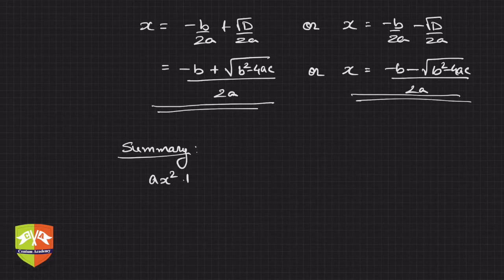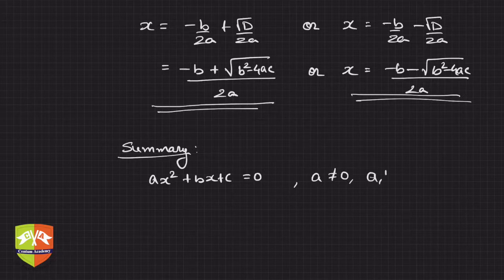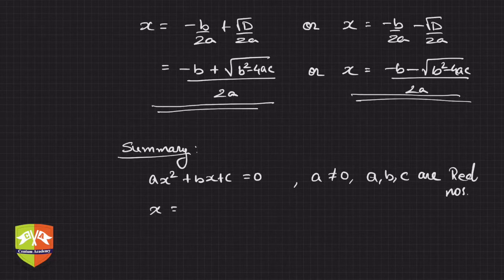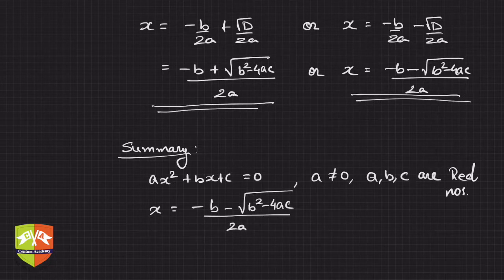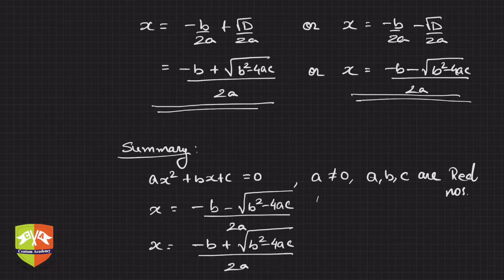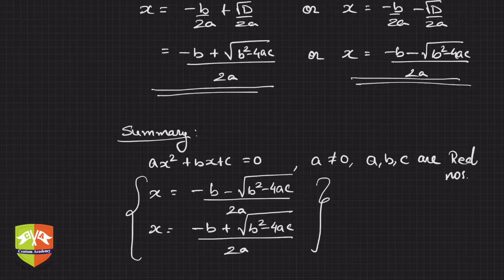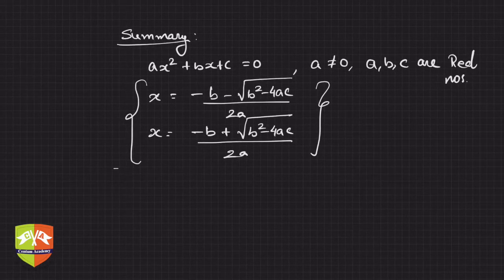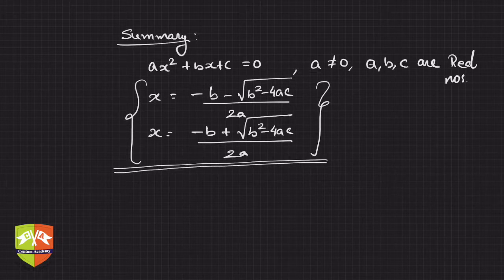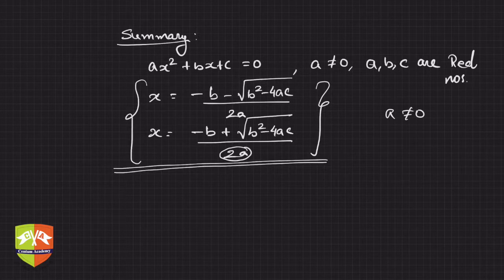Summary: if you have a quadratic equation ax² + bx + c = 0 where a ≠ 0 and a, b, c are real numbers, then x = (-b - √(b² - 4ac)) / 2a or x = (-b + √(b² - 4ac)) / 2a. Remember this — any time you get stuck solving a quadratic equation, this formula will rescue you. It is valid under all circumstances, and a cannot be 0 since it appears in the denominator as 2a.